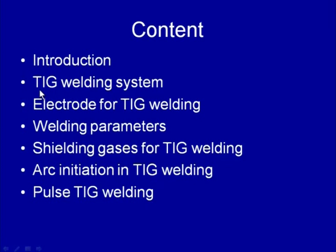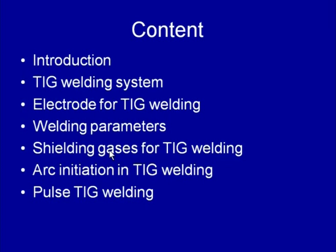We will cover the important components of the TIG welding system, the electrode types and shapes used for developing weld joints, welding parameters like current, speed, and arc voltage, and the common shielding gases used in GTAW — mainly argon and helium and their mixtures. We will also see the methods for arc initiation and the pulse mode of the GTAW process.